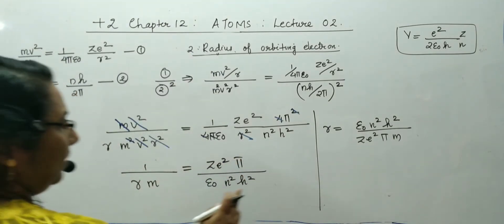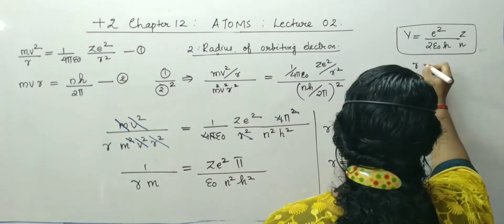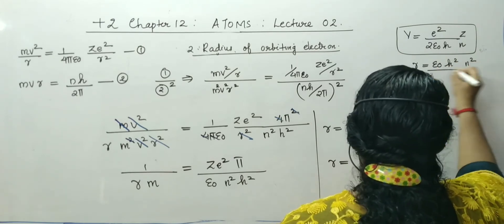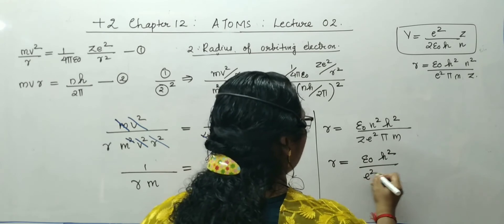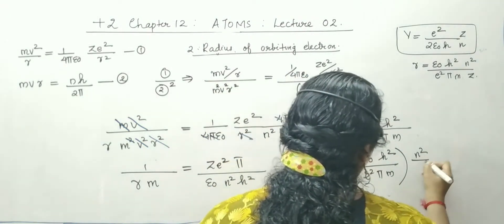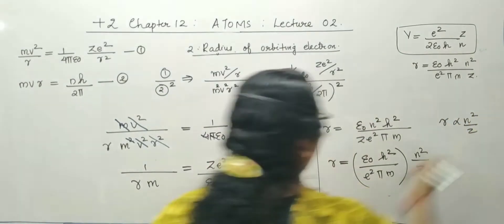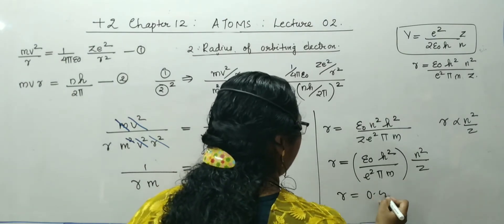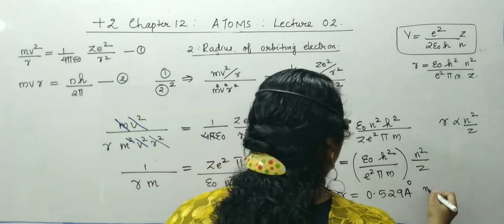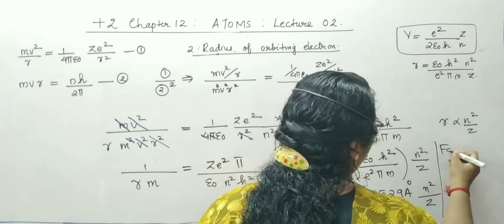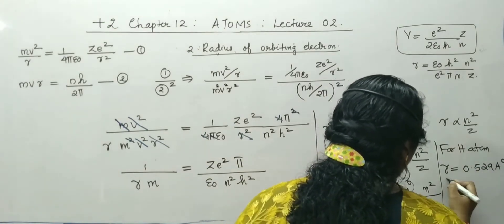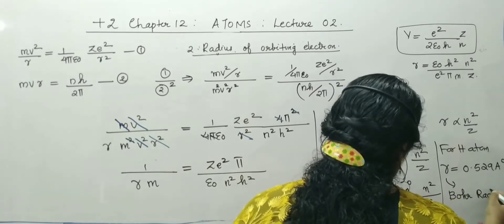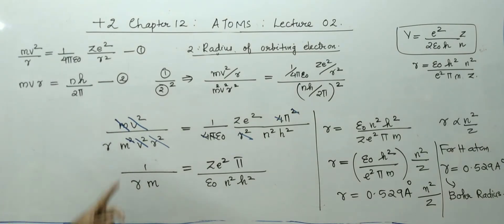The radius equation becomes r = [ε₀h²/(e²πm)] × n²/Z. That is, r is proportional to n²/Z. Taking the constants and putting the values, r = 0.529 Å × n²/Z. For hydrogen atom, n = 1 and z = 1, so r = 0.529 Å. This radius is called the Bohr radius. In order to get the radius, you have to take equation one divided by equation two squared.